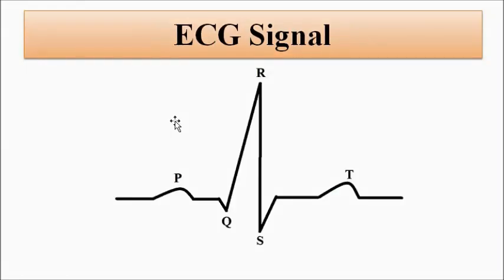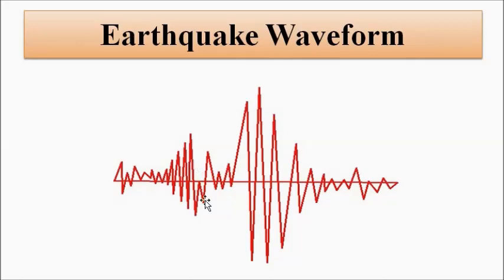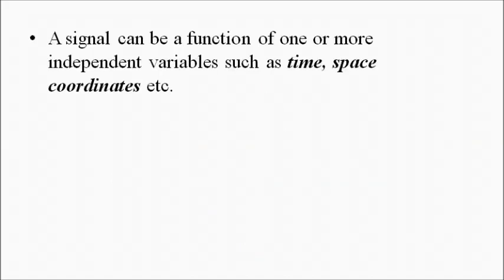Let us consider an ECG signal. This is the typical waveform pattern of an ECG signal, which we discussed in detail in the biomedical instrumentation section. The P, Q, R, S, and T are the characteristic points and positions used to study the behavior of the ECG signal. As another example, when an earthquake happens, the vibrations and oscillations produced can also be represented in the form of a signal — this is what an earthquake waveform looks like. These are various examples of how signals play a role in our day-to-day lives.